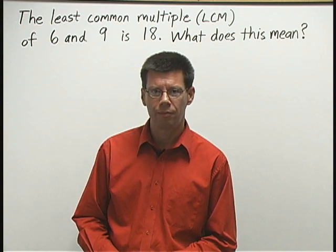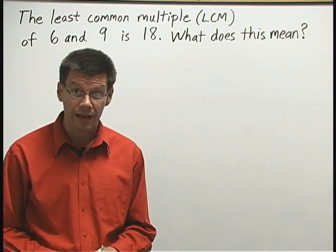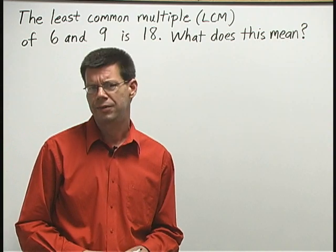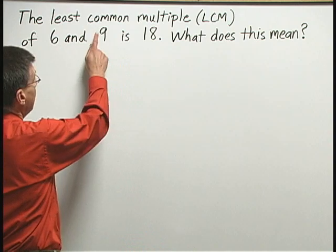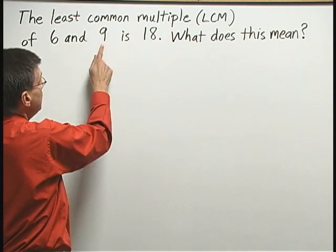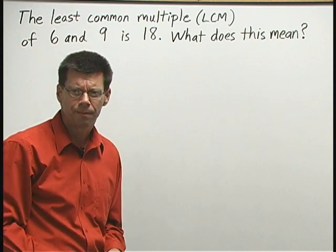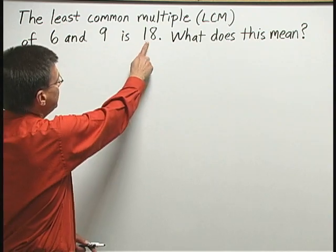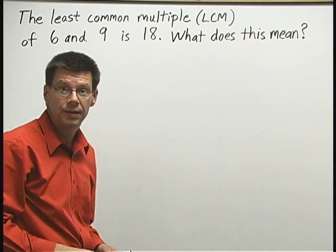We're not going to do a problem here. In fact, we're going to take a problem where we already have the answer, and we're going to analyze what that answer means. The least common multiple, or LCM, of 6 and 9 is 18. What does this mean? What does 18 have to do with these two numbers, 6 and 9?